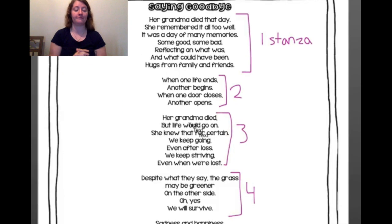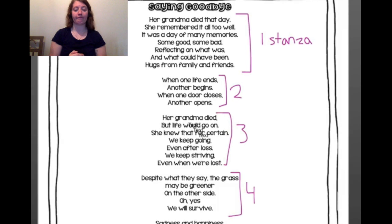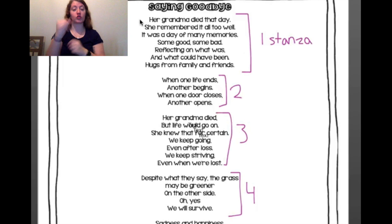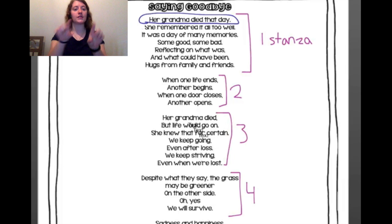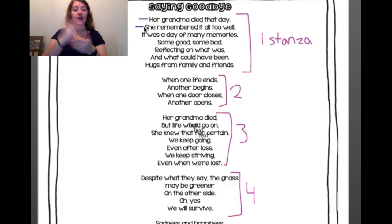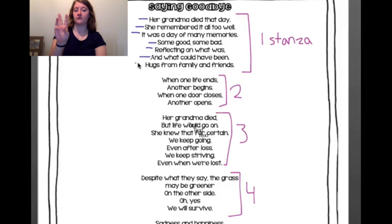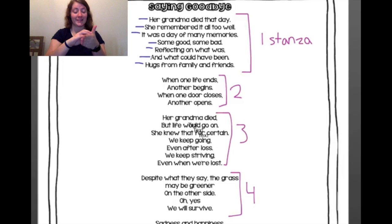Now, we're also talking about lines in a poem. Lines in a poem is just one straight group of words. So if we were to look at our first stanza, this group of words right here — that is one line. It's words that stretch across one line. So if I were to look at my first stanza, there's one, two, three, four, five, six, seven. So in my first stanza, I have seven lines.